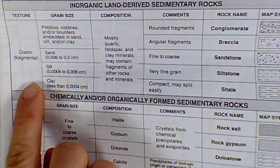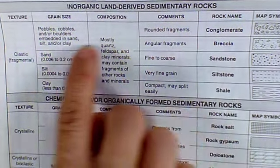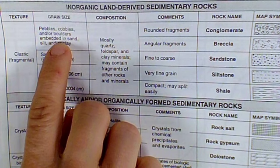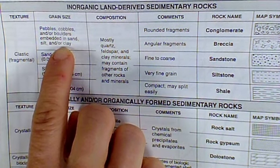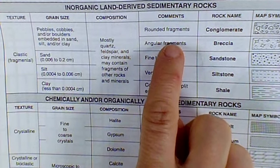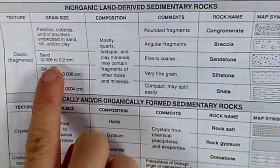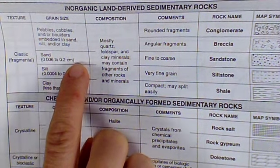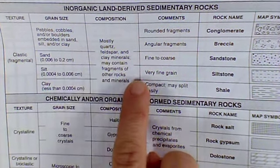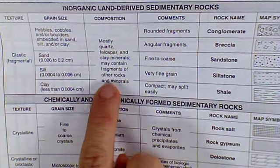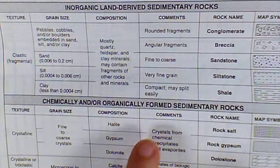Just as I described, our conglomerate and breccia are made of pebbles, cobbles, and/or boulders embedded in sand, silt, and/or clay. Conglomerate is rounded and breccia is angular. We have sand with grain sizes given — fine to coarse sandstone. There's also siltstone with very fine grain, and shale is listed as just clay in the reference tables.